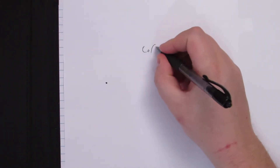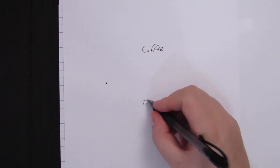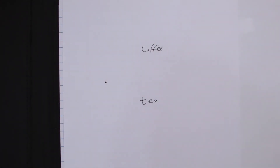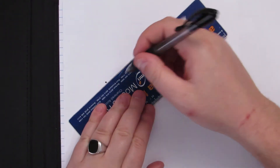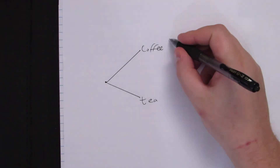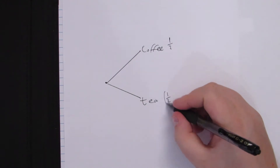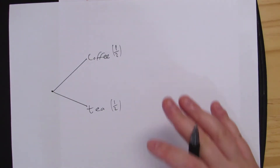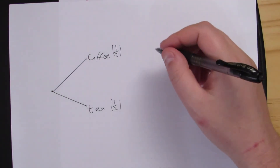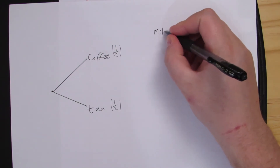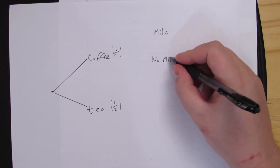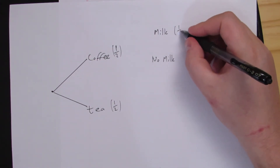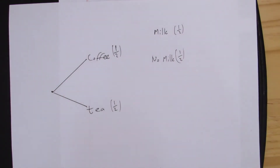We start off with our initial event. Our first choice is what are we going to drink — we can either choose coffee or we can choose tea. Those are equally likely, so we're going to look at the probability of this. You have two options, so each one has a probability of a half. If I choose to drink coffee, then I have two options: I can either have it with milk or no milk.